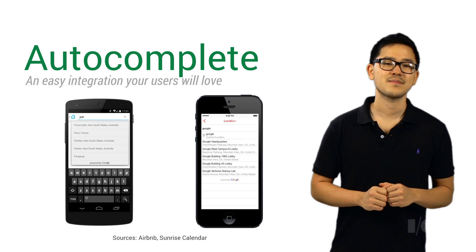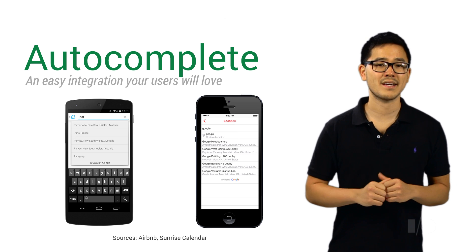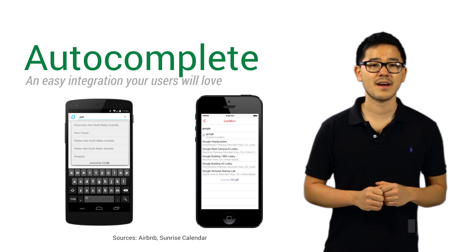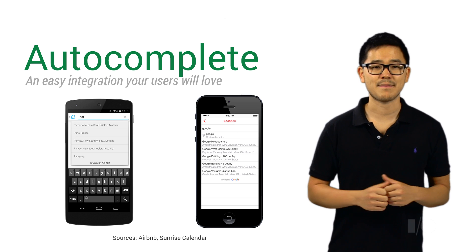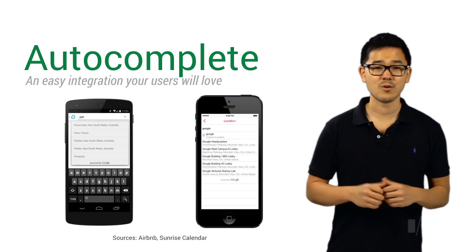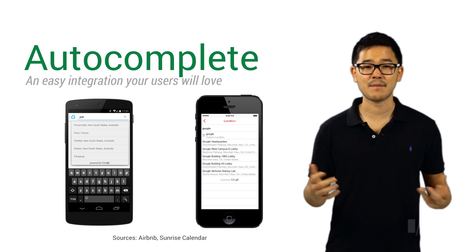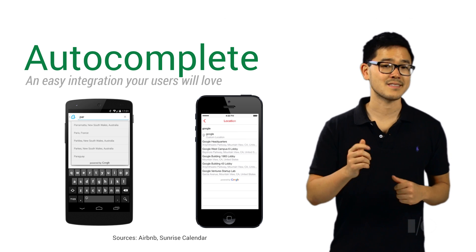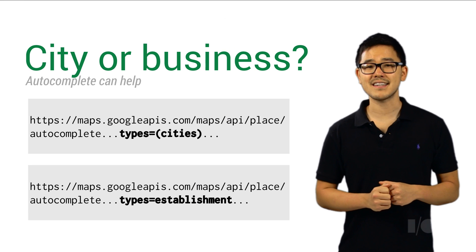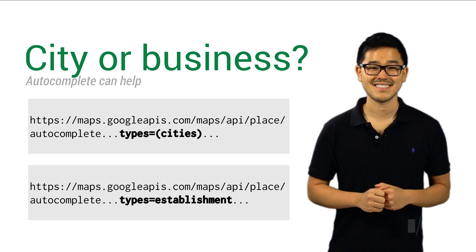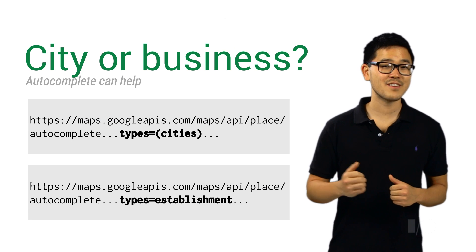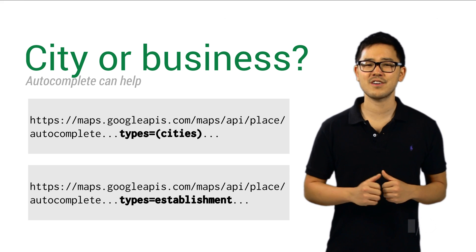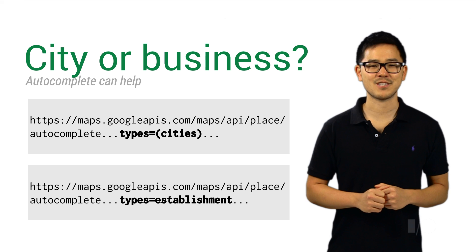The Autocomplete API allows you to choose what types of places you want to get back. So if you're a real estate app that only cares about cities, or a travel planning app that only cares about establishments, or a geotagging app that cares about both, Autocomplete can be customized to suit your needs. We're huge fans of Autocomplete, and with its clear benefits to both developers and end users, we believe it's a no-brainer integration for any location-based application.